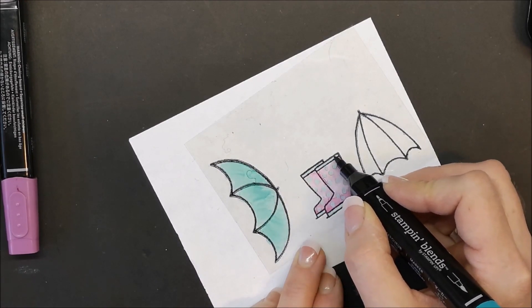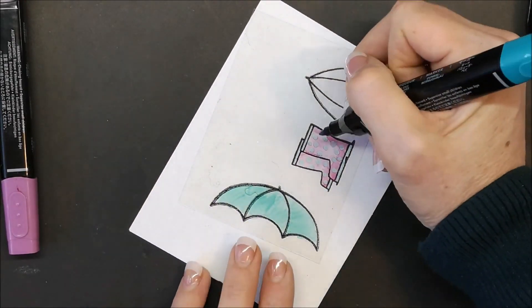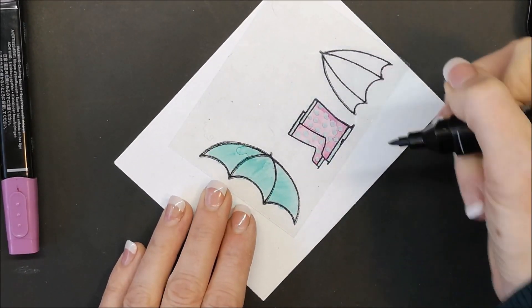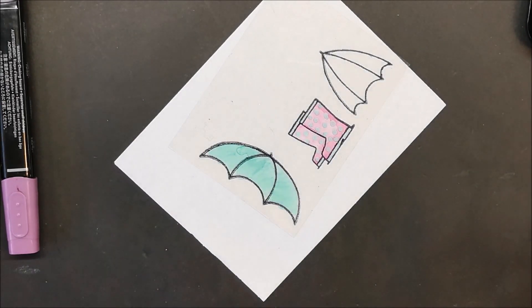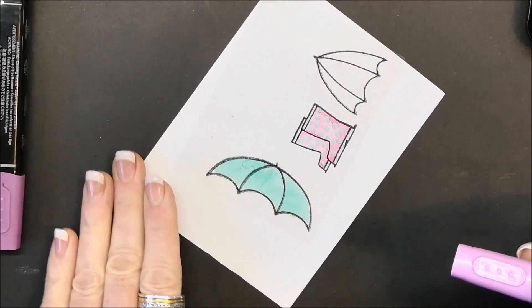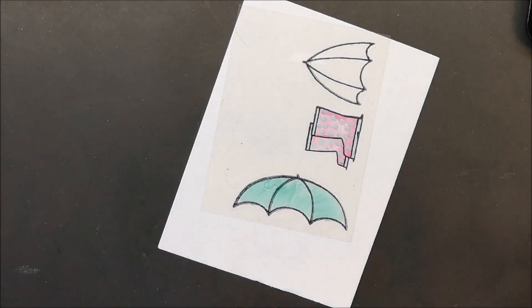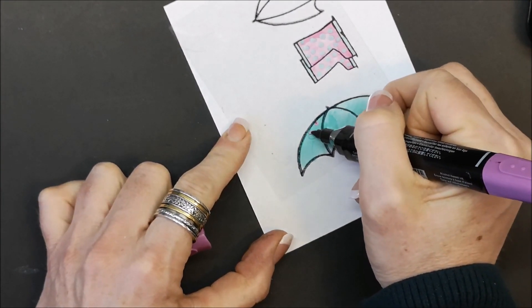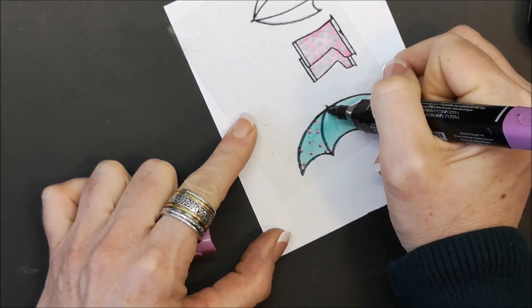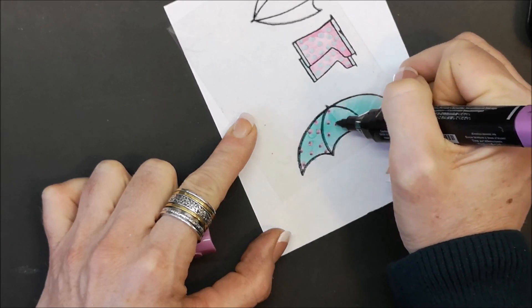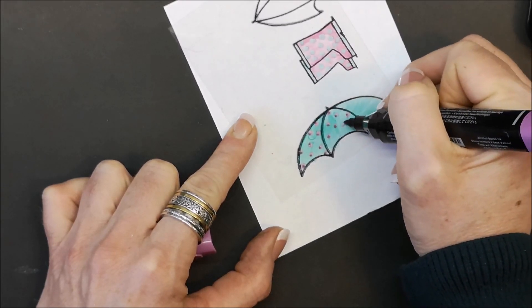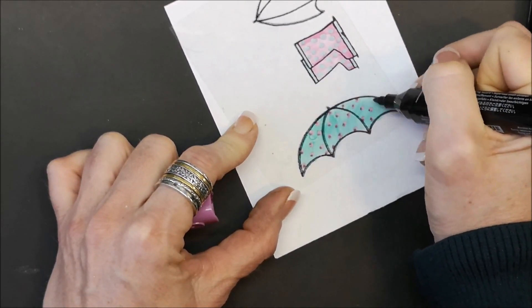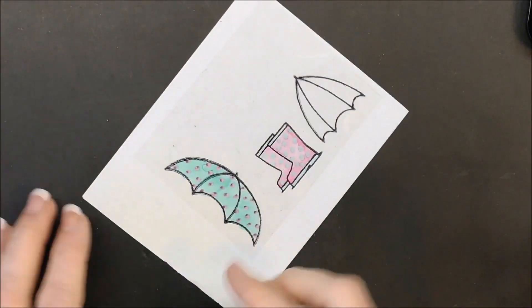I think I'm going to put some dark Bermuda Bay on the bottoms and tops of the boots. This technique is going to blow your mind, it is so cool. Now with the umbrella I'm going to use the dark Rich Razzleberry and do the same thing, adding some dots to make a polka dot.